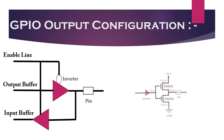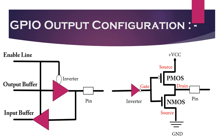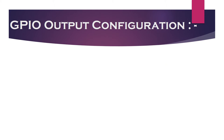Each GPIO pin consists of two buffers — one is for input and the other is for output. A buffer is a circuit which consists of two CMOS transistors connected in this fashion. All GPIOs are by default configured in input mode with floating or high impedance state.